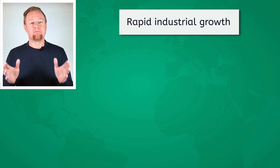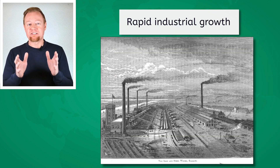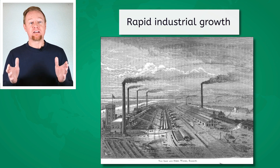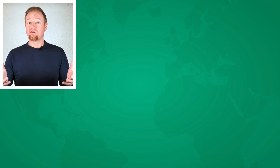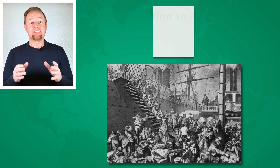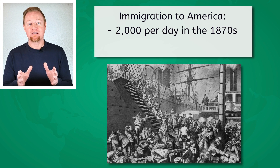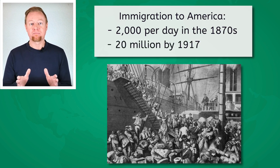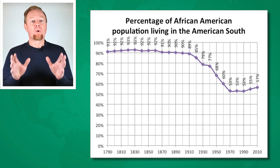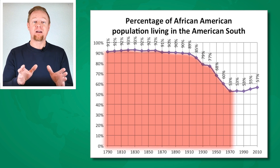And third, rapid industrial growth. The Civil War created the need for massive industrial output. The systems that were built to sustain the war effort were then put towards incredible peacetime production, rapidly expanding the industrial might of the United States. This expansion of output also required a massive influx of labor. From the 1870s through the beginning of the 20th century, millions of immigrants poured into the U.S. — as many as 2,000 people per day in the 1870s, totaling almost 20 million by 1917. The movement wasn't only from the outside; scores of black people fled the segregated South looking for opportunities in northern cities. This great migration would see almost 6 million black people migrate north by 1970.